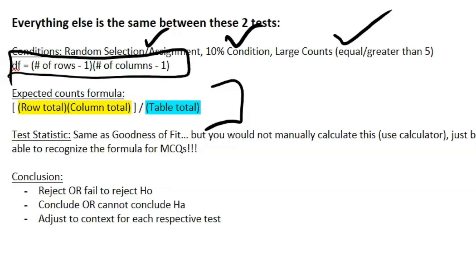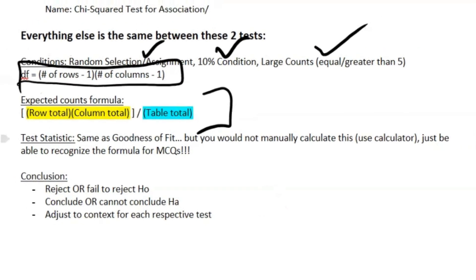Your row total times your column total all divided by your table total. Your test statistic is the same as your goodness of fit. Again, don't manually calculate it; it's just good to know that formula in case it shows up on a multiple choice for some reason, which is very unlikely because this unit is very unlikely to show up.